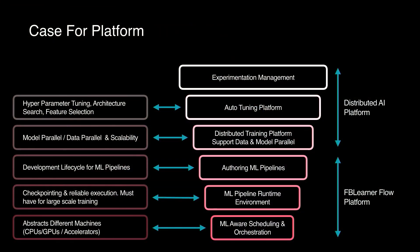But that's not enough. ML engineers want to distribute their models — using deep learning with model parallelism and data parallelism — and scale these models, so you want a platform to ease that scalability. We built the distributed training platform for that. We also know ML takes a lot of experiments with hyperparameter tweaking, feature engineering, and model selection, so we built an auto-tuning platform as well. Collectively, we call this the distributed AI platform. The FB Learner Flow platform and distributed AI platform together form our experimentation management system, providing flexibility for ML engineers and increasing their productivity.